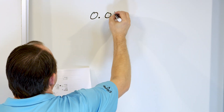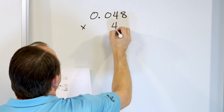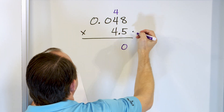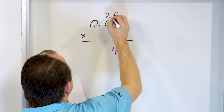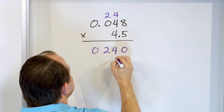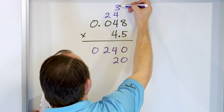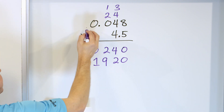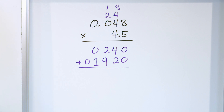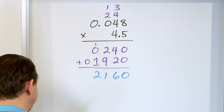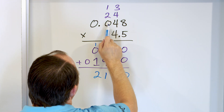Here is our very last problem: 0.048 multiplied by 4.5. Starting on the right: 5 times 8 is 40, carry the 4. 5 times 4 is 20, plus 4 is 24, carry the 2. 5 times 0 is 0, plus 2 is 2. 5 times 0 is 0. Now drop a 0 to multiply by 4: 4 times 8 is 32, carry the 3. 4 times 4 is 16, plus 3 is 19, carry the 1. 4 times 0 is 0, plus 1 is 1. 4 times 0 is 0. Adding the rows: we have 0, 4 plus 2 is 6, then 9, 10, 11 — carry 1 — and we have 2. Result: 2, 1, 6, 0. We have 3 digits after the decimal in 0.048 and 1 in 4.5, for a total of 4.